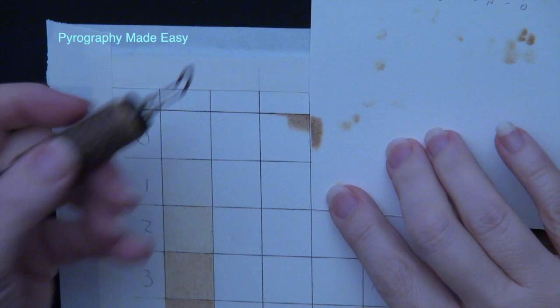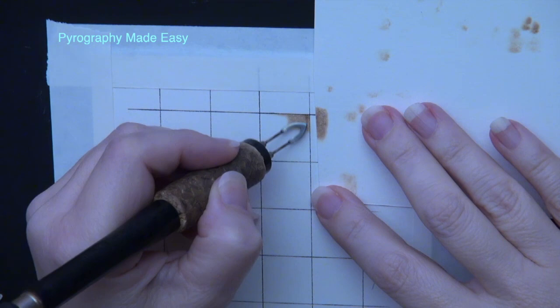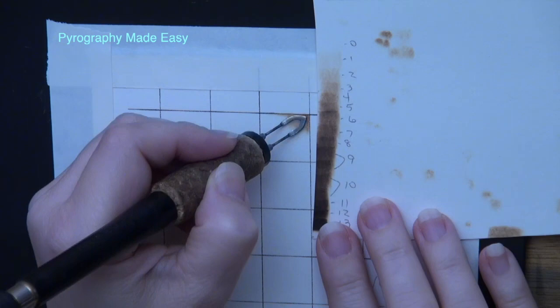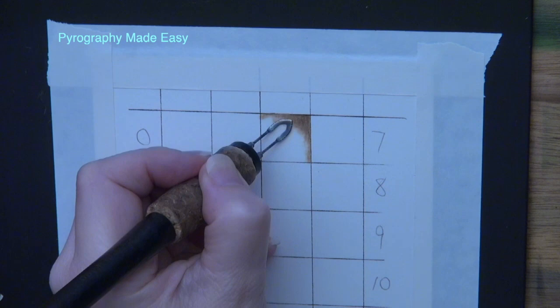After you get a section burned in on the new square use the burn test from the last square and double check it against the color on the new one. When the squares are touching it is easy to compare their darkness levels. This check is a workaround since this square isn't touching the last one and it's a lot harder to compare them at that point.